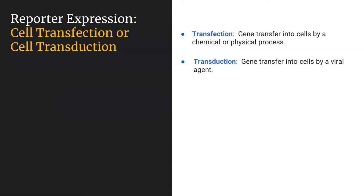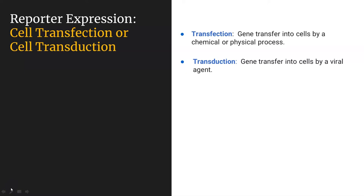How does one get the probe into the mouse or rat model system — the moiety that produces the light, either by bioluminescence or fluorescence? There are essentially two ways: either by genetic modification or by direct injection of the probe of interest. Focusing first on genetic modification, there are two means: either by transfection or transduction. With transfection, you are introducing new genetic material through a chemical or physical process. With transduction, you are introducing the genetic material via a viral agent.